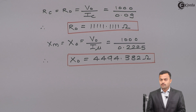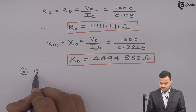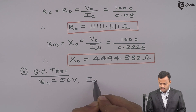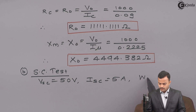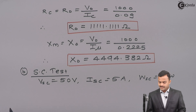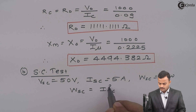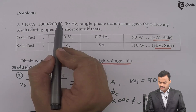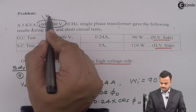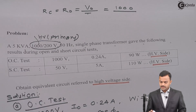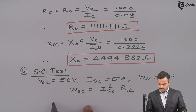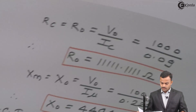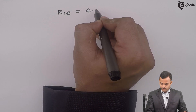This is the result from the open circuit test. Now for the short circuit test: V_SC = 50 V, I_SC = 5 A, and W_SC = 110 W. The short circuit test power is the copper loss. Since the test is performed on the HV side, which is the primary, we use R₁E. So W_SC = I_SC² × R₁E gives 110 = 5² × R₁E, and R₁E = 4.4 Ω.